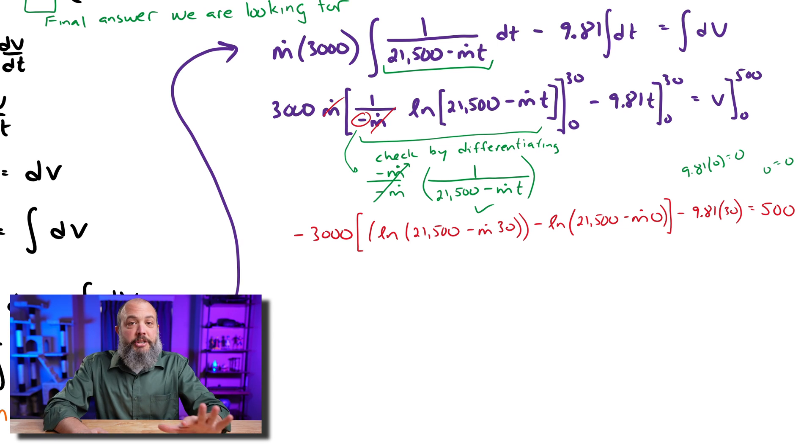So the m dot times 0 term is going to go away. So we just have one variable left in this equation, just one m dot term. It's not immediately obvious how to isolate it, but if we can just rearrange to solve for this term, that's the end of the problem. We're in the home stretch. We're almost there.